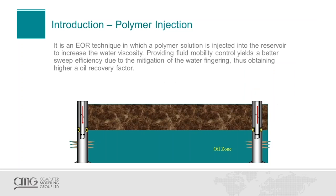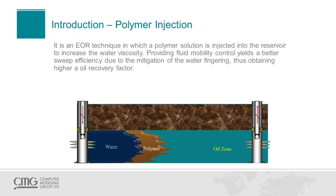Polymer injection is an enhanced oil recovery technique in which a polymer solution is injected into the reservoir to increase the water viscosity. This provides fluid mobility control and yields a better sweep efficiency because we are going to mitigate the water fingering and channeling, and after we do all this, we're going to get a higher oil recovery factor.